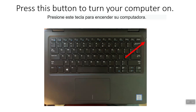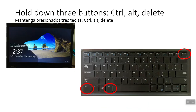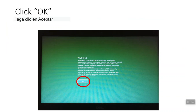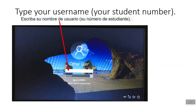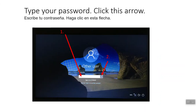First, turn on your computer with the power button which is at the top right of your keyboard. Hold down these three buttons: Ctrl, Alt, and Delete. Click OK. Type your username which is your student number. Type your password and then click this arrow.